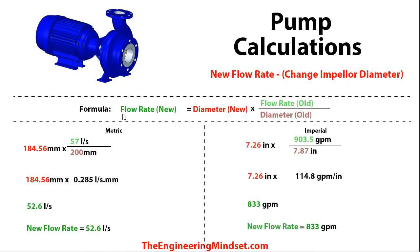For this one, the new flow rate equals the new diameter of the impeller multiplied by the old flow rate divided by the diameter of the old impeller. If we drop those figures in, it comes to 52.6 litres per second or 833 gallons per minute.